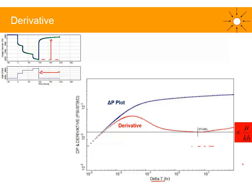This is the first golden rule, or the first golden statement, on the derivative plot. A second statement is that the vertical separation between the two plots is indicative of skin. A larger separation between the delta P plot and the derivative means a larger skin.